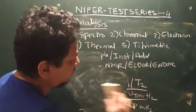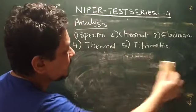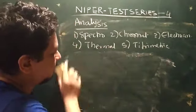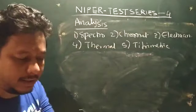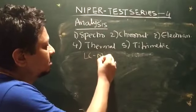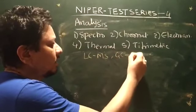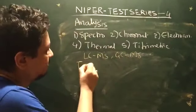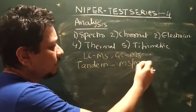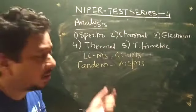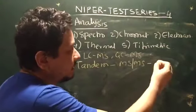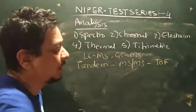Then you have mass spectrometric techniques. You have to remember all the advanced forms of mass spectroscopic technique — hyphenated techniques like LC-MS and GC-MS. Then you have tandem mass spectrometric technique, that is your MS-MS technique. Then what is the limit of detection, different types of detectors, and time of flight.